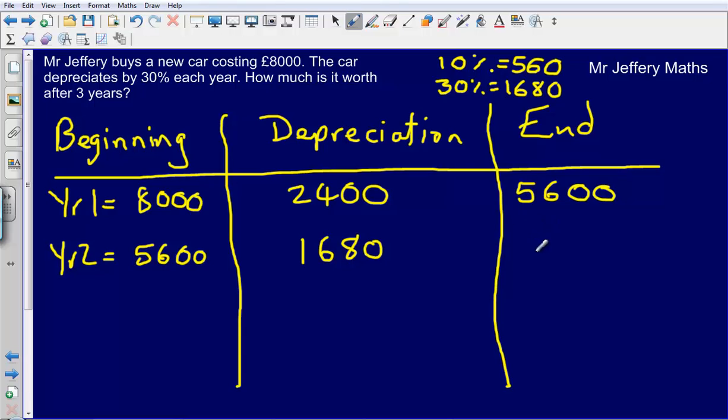And that means that at the end of year 2, I will be left with £5,600 minus £1,680. So that means at the beginning of year 3, my car will be worth £3,920.